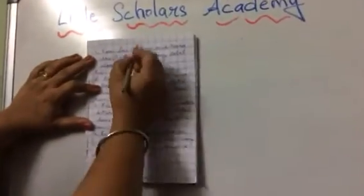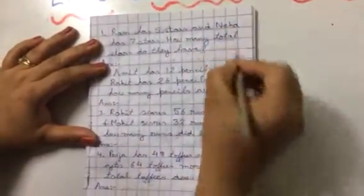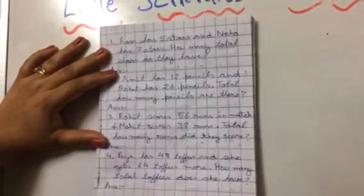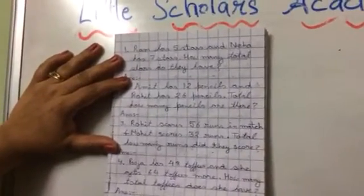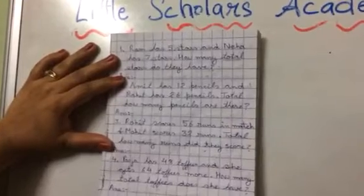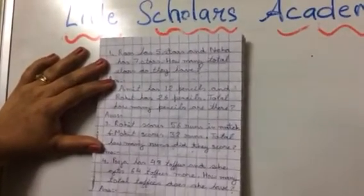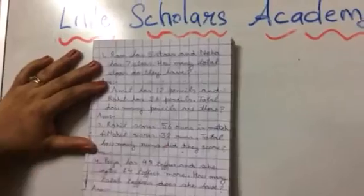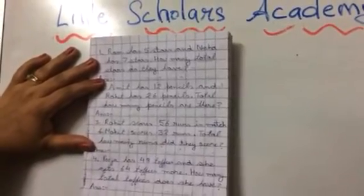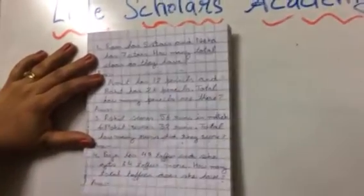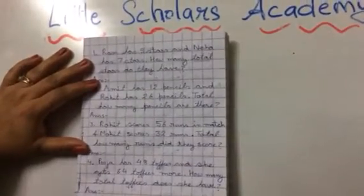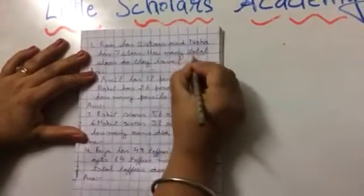How many total stars do they have? Toh matlab ki Ram ke paas five stars hai, Neha ke paas seven stars hai. Toh total stars doonu ke paas kitnye hai. Jab bhi word total aata hai ya all aata hai, toh humne kya karna hoota hai? Humne us mein addition karna hoota hai. Total kitna hua? Total batao. Yeh tumhari five books hai, or Harishida ki five books hai, or Rasleen ki five books hai. Total kitnye books hai. Toh jab bhi humse total poochhenge, that means humko add karna hooga. Thik hai?